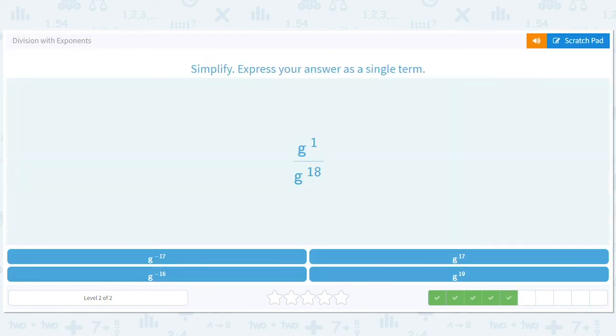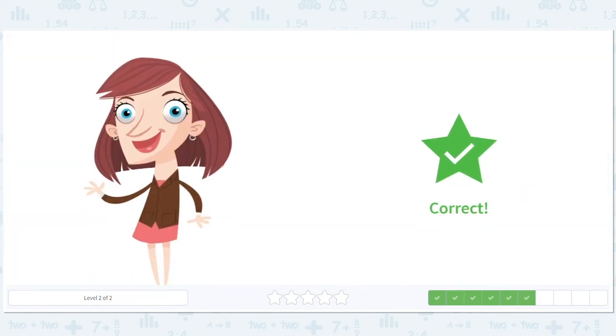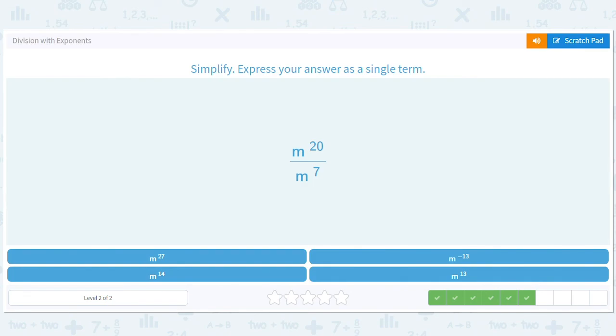1 minus 18 is negative 17 so g to the negative 17. 20 minus 7 is 13 so we have m to the 13th.